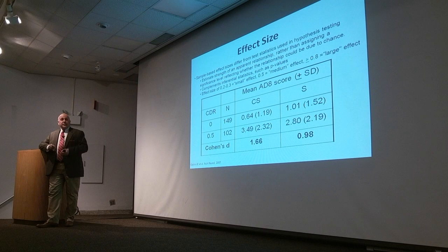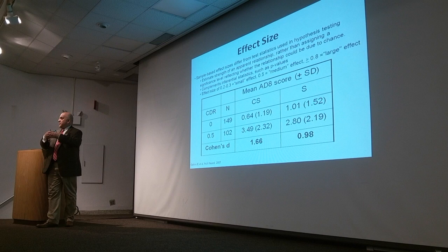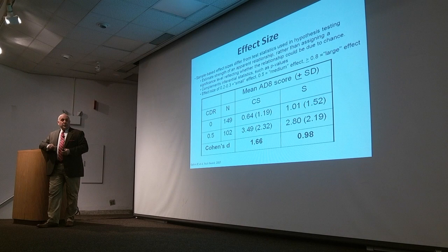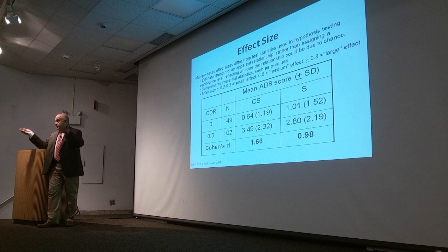Another way to look at this is effect size — how well the two groups can be discriminated, with bigger effect meaning a more powerful tool. From the informant version, the effect size is 166%, which is a very large effect, very easy to discriminate non-impaired from impaired. Even from the participant's own perspective, it's almost 100% — still a very large effect size.